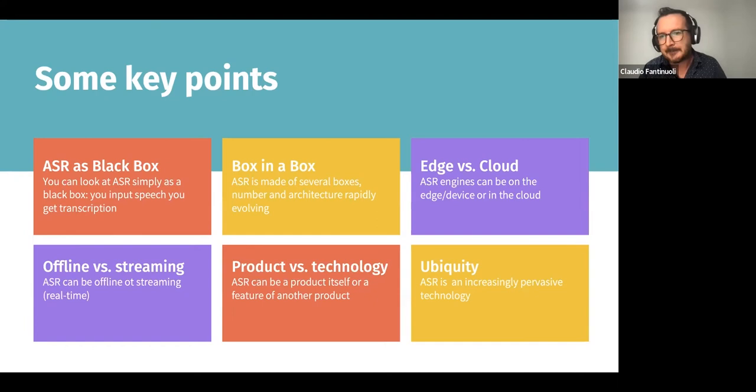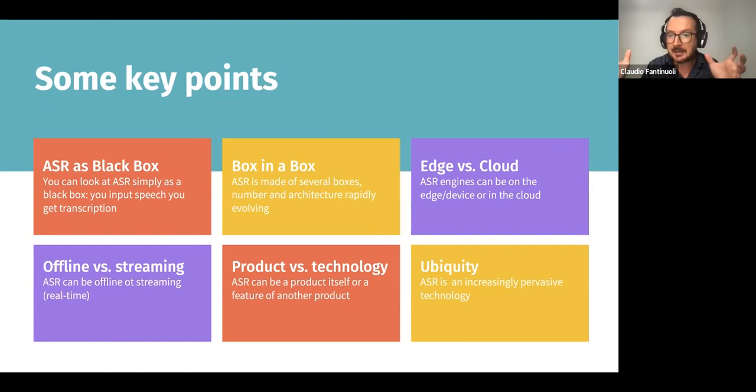However, technology is making these language models smaller and smaller, more performant, and they are finding their way more easily into edge devices. Speech recognition can be offline or streaming — the difference is important but obvious. Offline means you give the entire speech or video and get the transcription afterwards. Streaming means you get the transcription while the speech is unfolding.